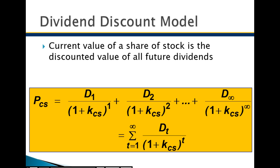The concept is straightforward: the more dividends you get in relationship to K, the more valuable the stock. The lower the K, the more valuable the stock; the higher the K, the less valuable. The higher the dividends, the more valuable; the lower the dividends, the less valuable. This formula captures that relationship through division.